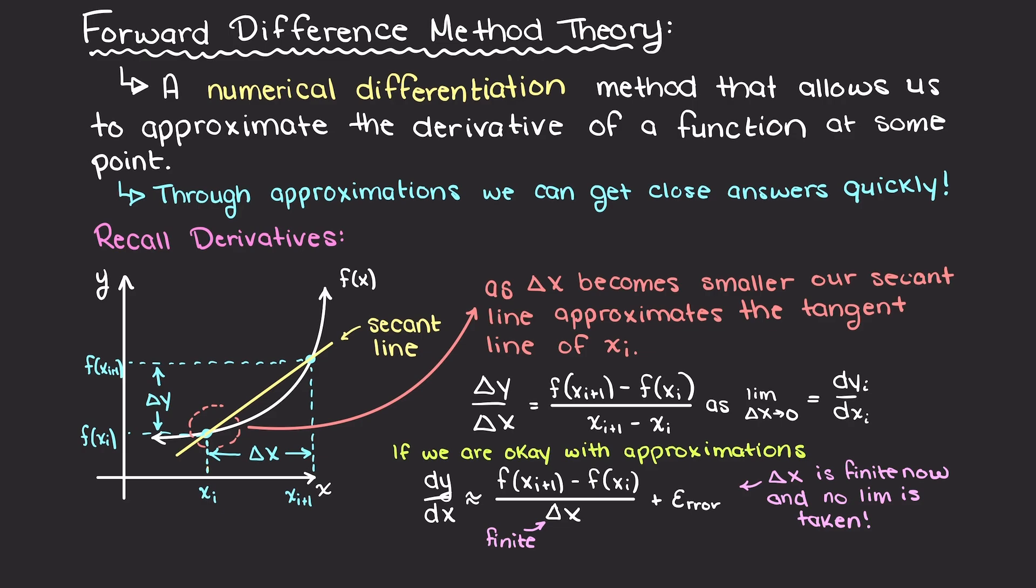So, how does this work and how does it relate to the forward difference method? Well, we want an understanding of how much accuracy we need to give up in order to get this good approximation for our derivative. How do we go about that? The way we do is through the use of Taylor's series approximations.